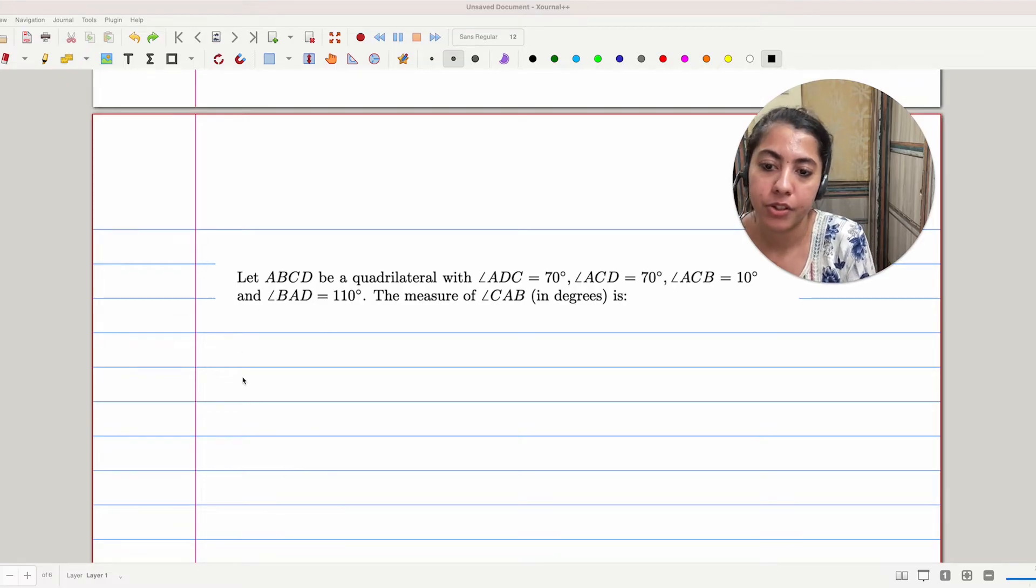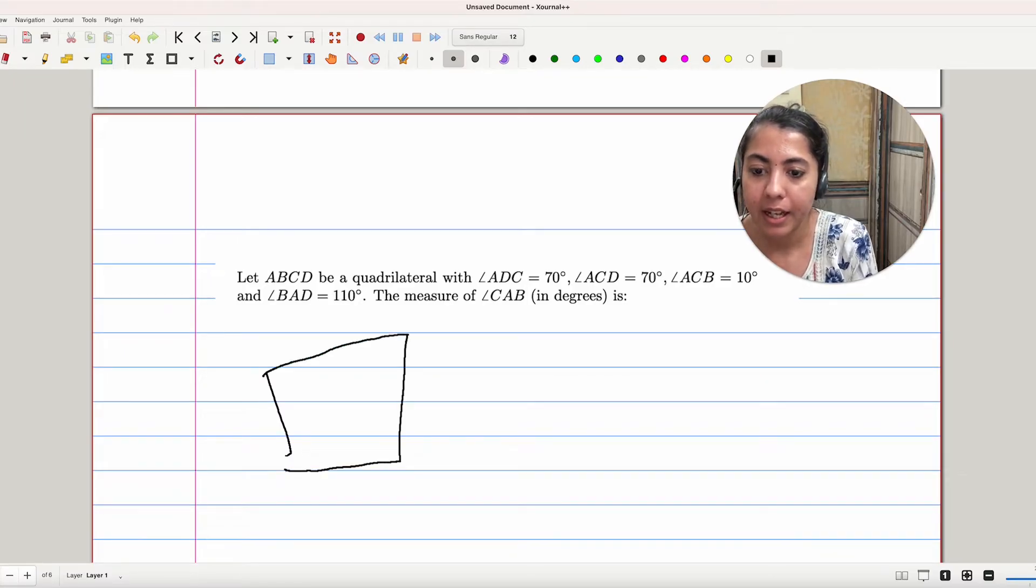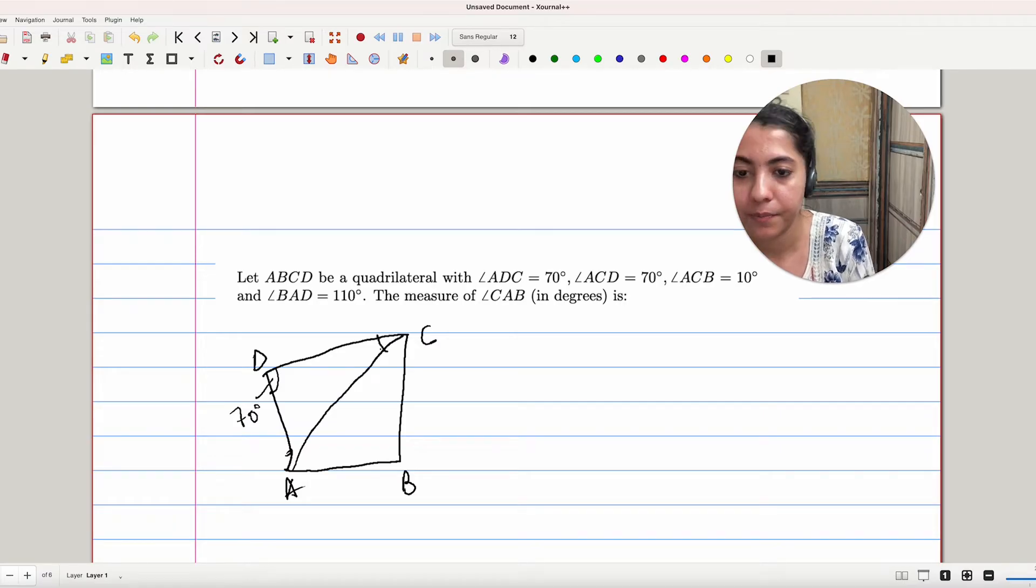Let's apply that knowledge in this question. First, here we have quadrilateral ABCD. Angle ADC is given as 70 degrees. Next, we have angle ACD. That will be this angle here. This is also 70 degrees.